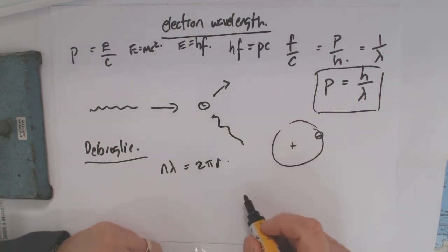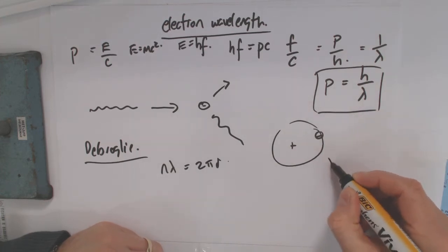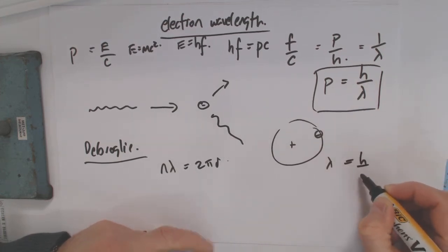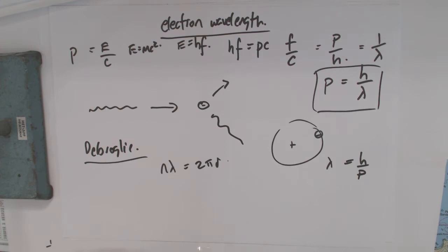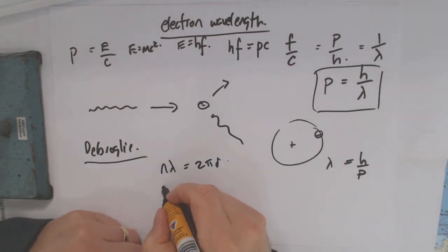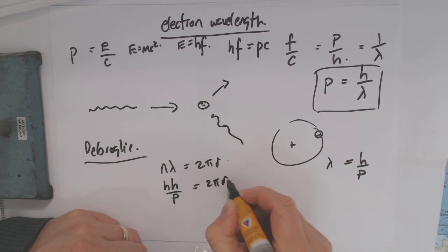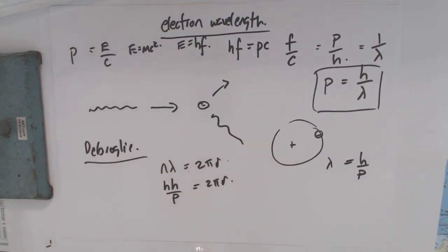But we already have this wavelength thing that we just derived, which says that wavelength is equal to h over momentum. So we can say n h over momentum equals 2 pi r, right? And where's that going to get us to?